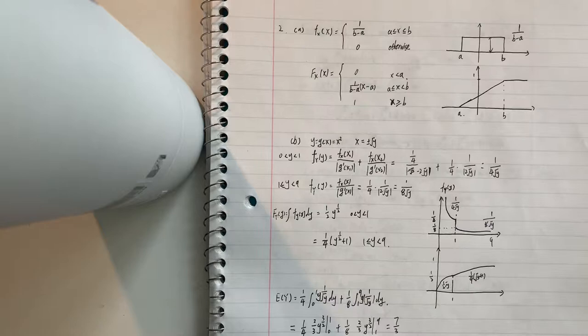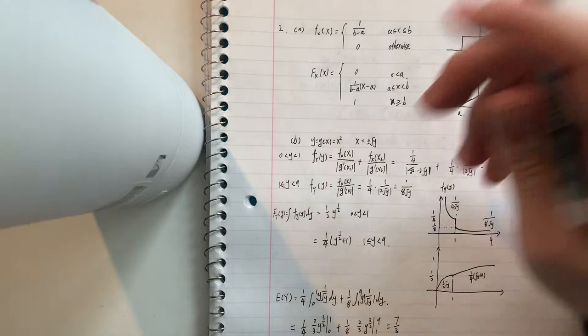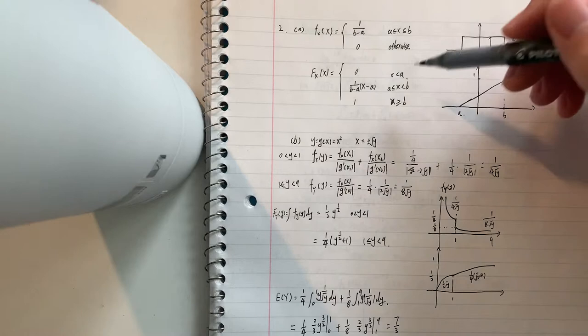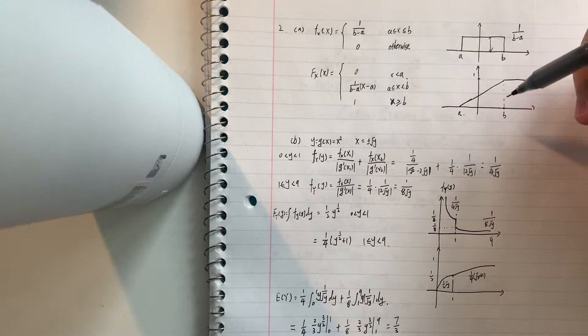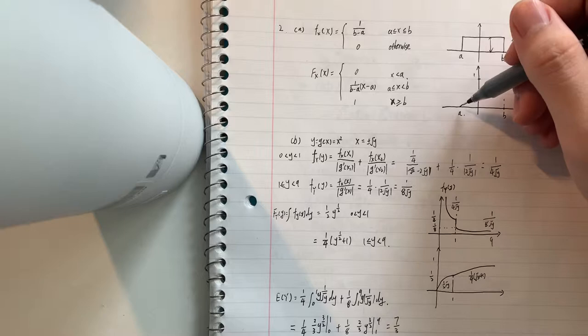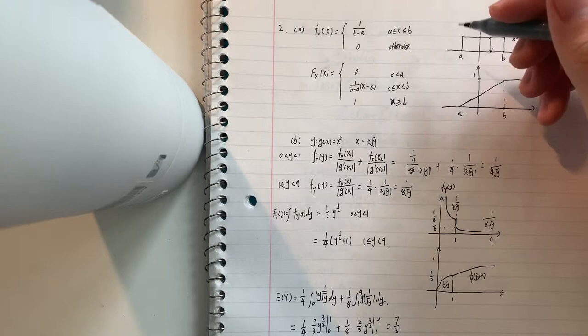And for this function, we can just do an integral of f of x, and we know that before, when x is smaller than a, it's equal to 0, and between a and b is equal to x minus a divided by b minus a, and larger than b is equal to 1.